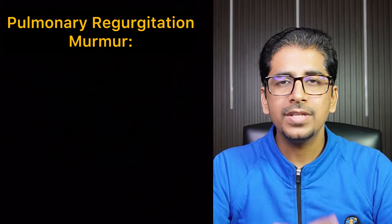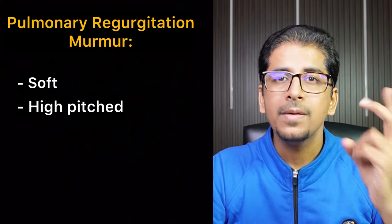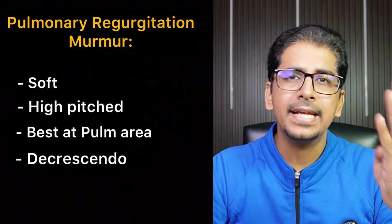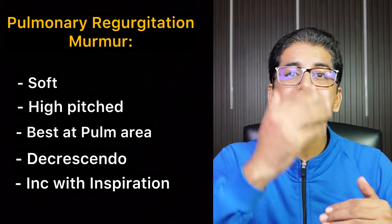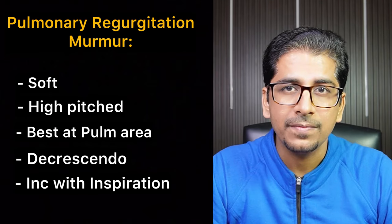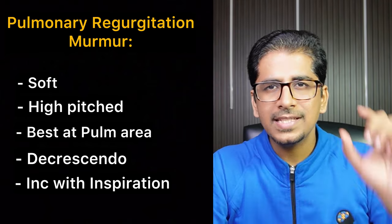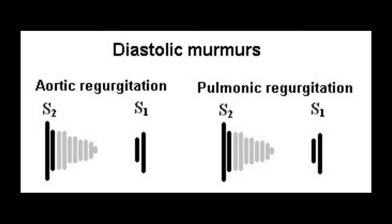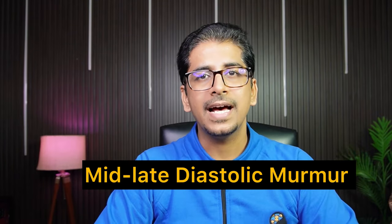Pulmonary regurgitation murmur is also soft, high-pitched, best heard at the pulmonary area, and has a decrescendo shape. It increases with inspiration, as it is a right-sided murmur. This murmur is also called the Graham Steell murmur. Listen to the murmurs of aortic regurgitation and pulmonary regurgitation.